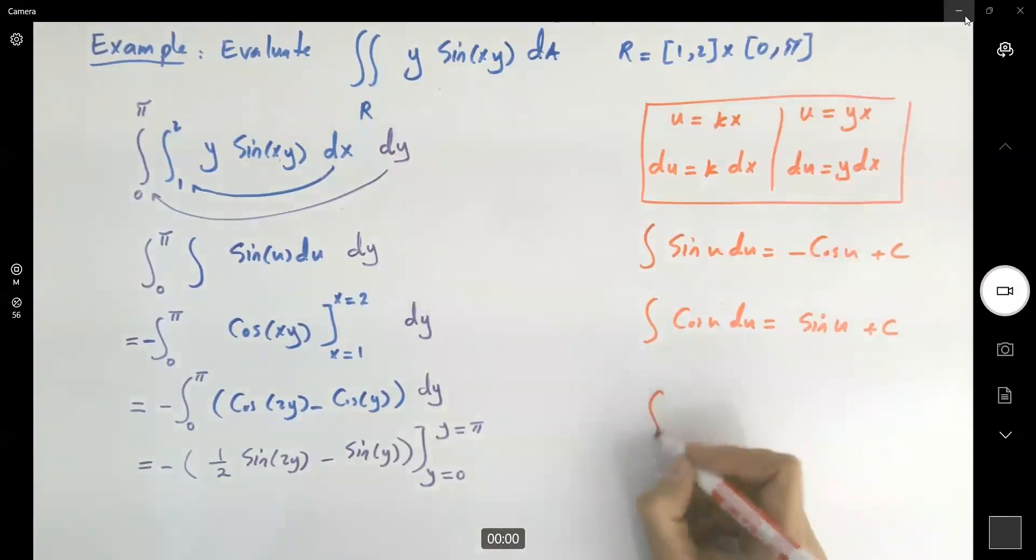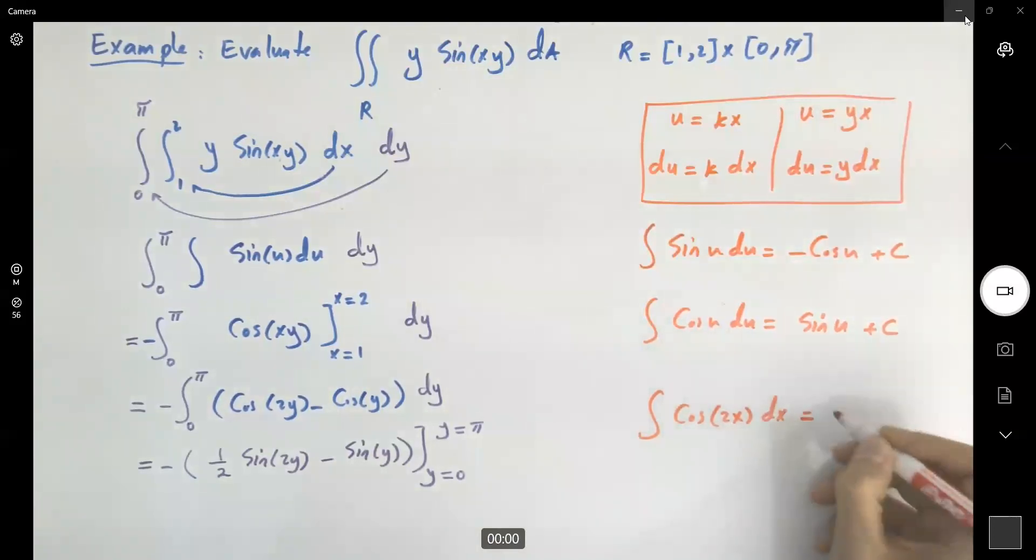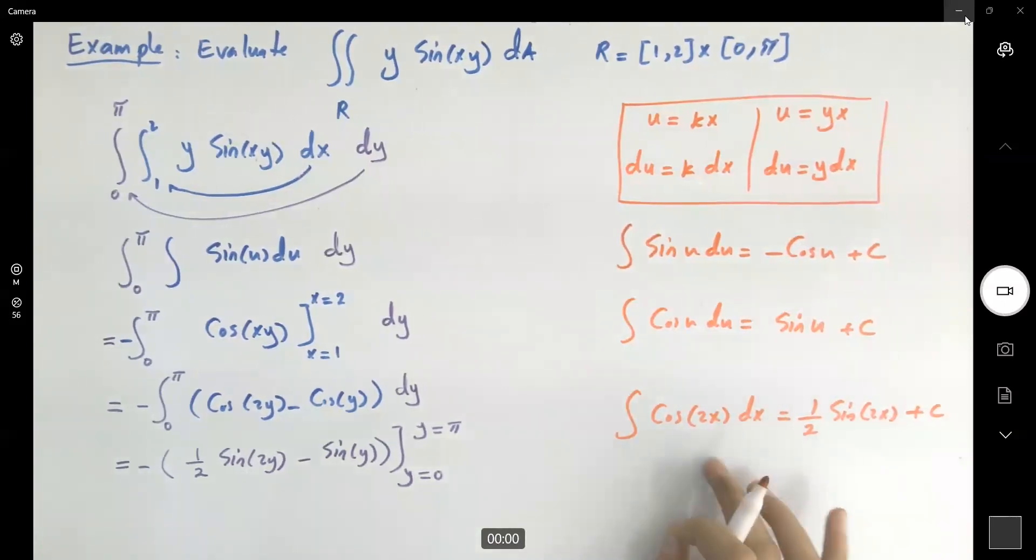Now remember that, when you have the integral of cosine 2x dx, this is a half sine 2x plus c. Going back to elementary calculus, these are all just reviews. If u is equal to 2x, du is 2 dx, or dx can be replaced by du divided by 2.